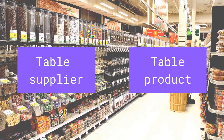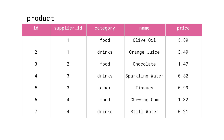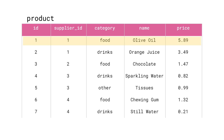We are going to work with two tables in this video: supplier and product. Suppliers from the table supplier provide products listed in the table product. The supplier table has only two columns: ID and name. For instance, the supplier with ID 4 is named Amazing Stuff. Now let's take a look at table product. It has five columns: ID, supplier ID, category, name, and price. For example, there is a product with ID 1 provided by the supplier with ID 1. The category is food, the product name is olive oil, and the price is 589.